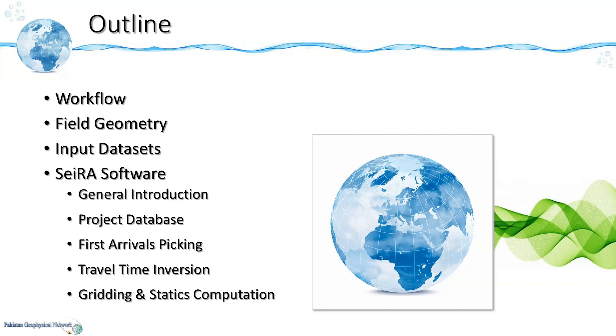The auto-pick module where first arrivals are being picked using neural networks as well as interactive picking, then the refract module where travel time inversion is performed to compute velocities and thicknesses of the weathered and sub-weathered layers, and finally gridding and statics computation.